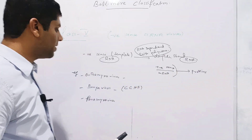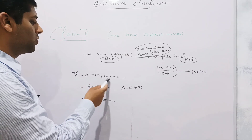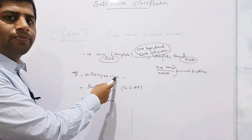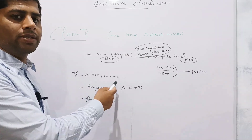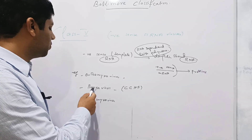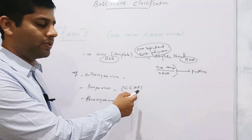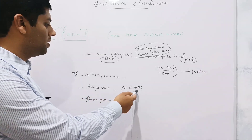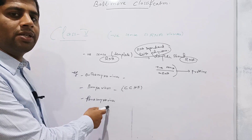Common examples of Class V are Orthomyxovirus, which includes Influenza virus causing respiratory tract infections. Bunyavirus causes Crimean-Congo hemorrhagic fever. Paramyxovirus causes parainfluenza and mumps.